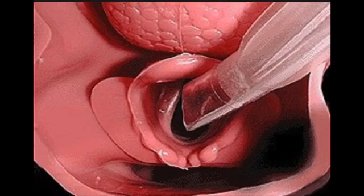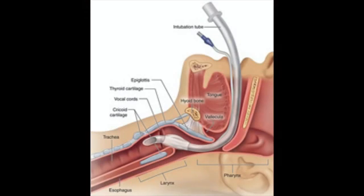The ET tube is being placed right in the center of the vocal cords. In this sagittal view of the upper airway, note how the ET tube curves and enters the trachea and vocal cords anterior to the esophagus. Note how the epiglottis and tongue are largely in the way, which you'll have to manipulate and move in order to visualize the cords appropriately.